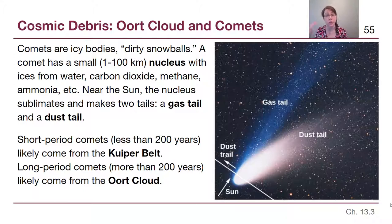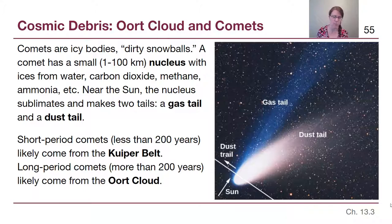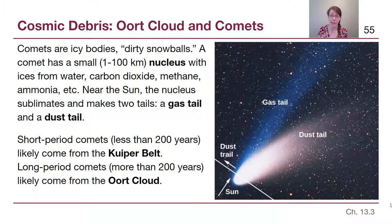If you've ever had dry ice at a party — the kind that keeps things cold and creates a fog effect sometimes used at Halloween — the process you're seeing is sublimation: carbon dioxide ice going from solid to gas form. Near the Sun, as the nucleus sublimates, it makes two different tails.